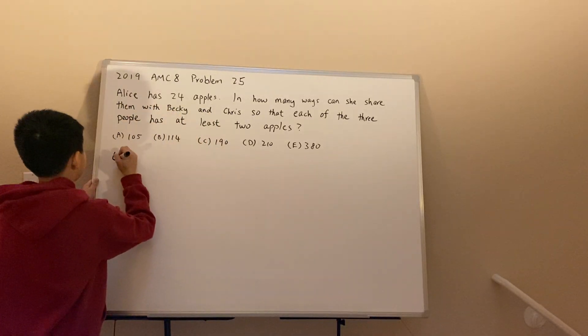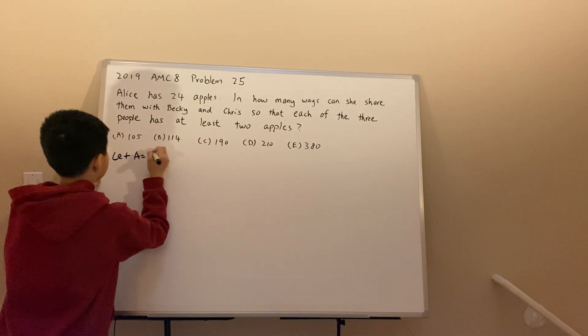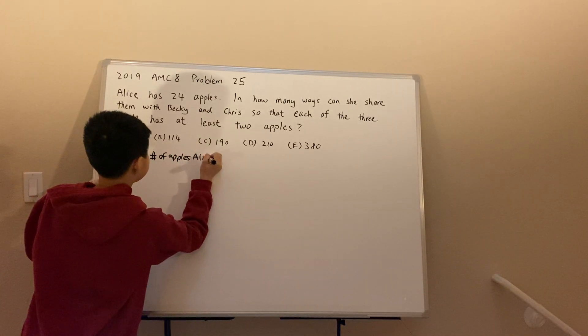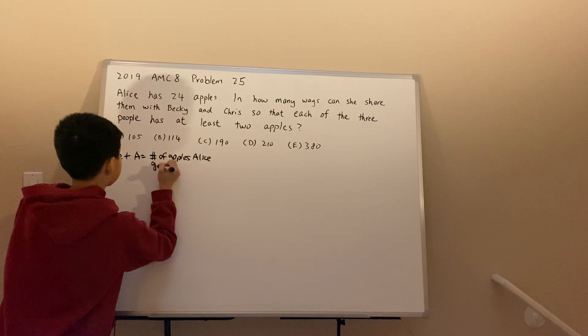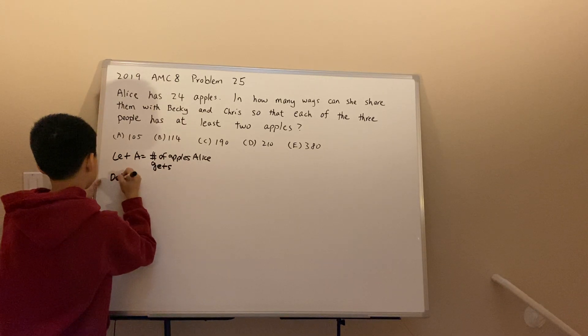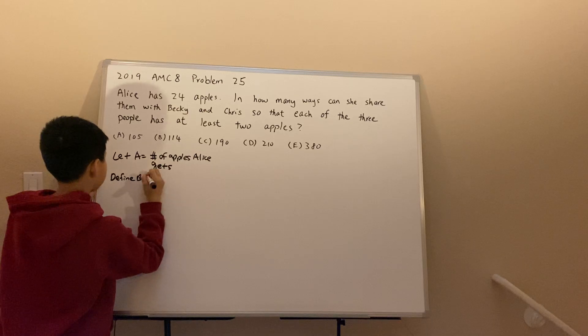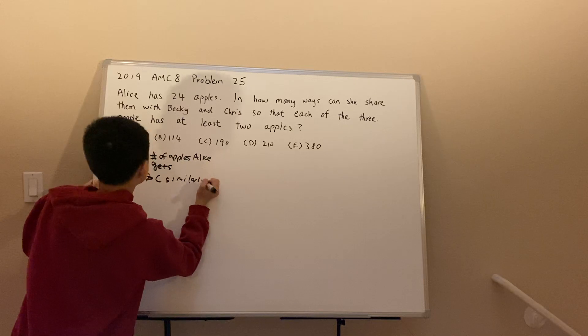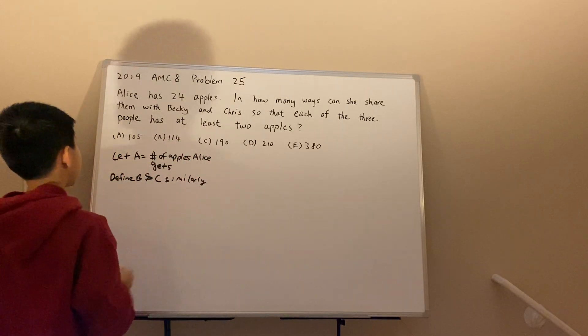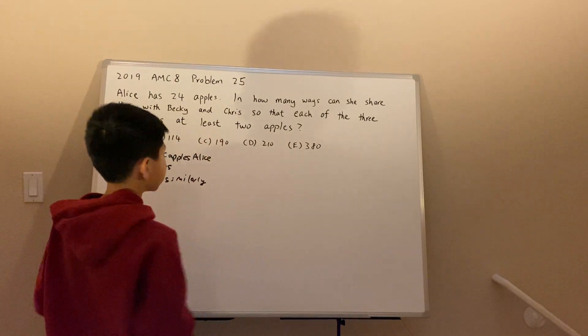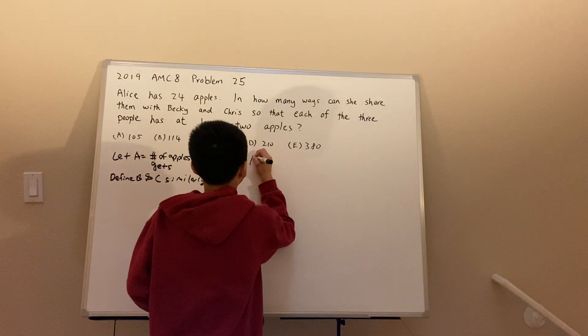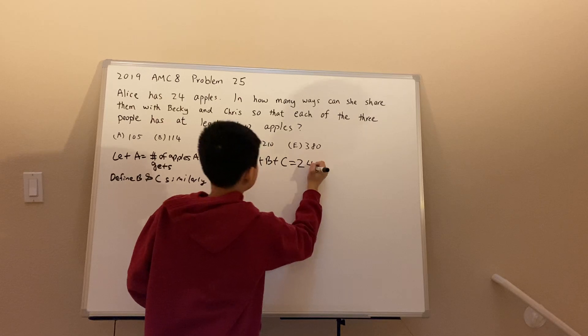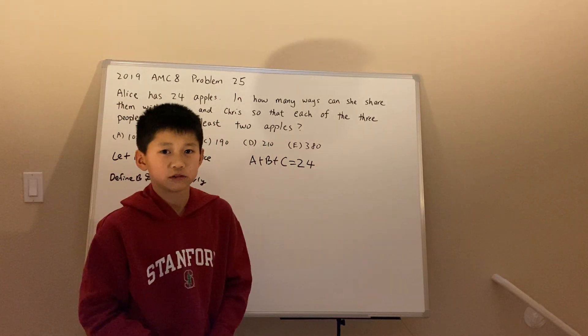We can let the variable A be the number of apples Alice gets, and we can define B and C similarly. So B is the number of apples Becky gets, and C can be the number of apples Chris gets. And we're given that A plus B plus C has to equal 24 because Alice has 24 apples to share with her friends.